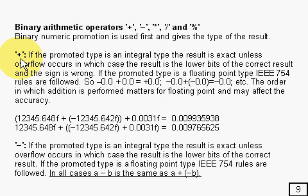So here's the first one, plus. We all know how to add up. If the promoted type is an integral type, so it'll end up being either int or long, the result is exact unless overflow occurs, in which case the result is the lower bits of the correct result and the sign is wrong. And if you work it out, that's exactly what you'd expect.